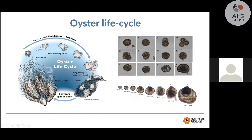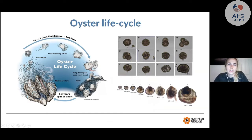Oysters are broadcast spawners — eggs and sperm are released into the water column where fertilization takes place. The cells develop into a trochophore and then a free-swimming larval stage, which lasts about 14 to 21 days before the larvae settle. They grow a foot, crawl on a surface as spat, and develop into juveniles. They're sedentary and it takes about one to three years before they mature to adults.